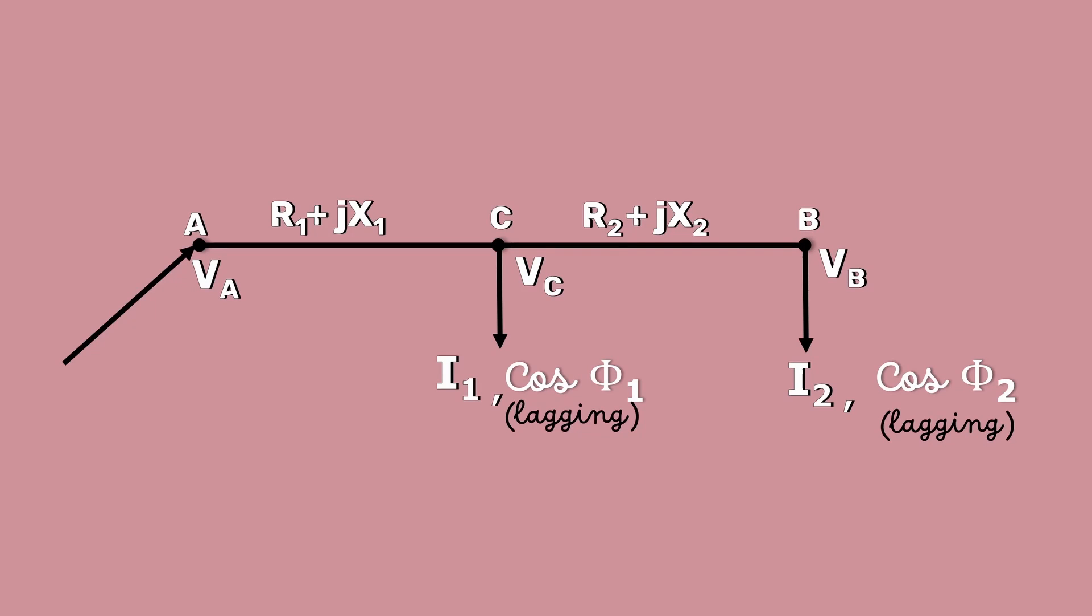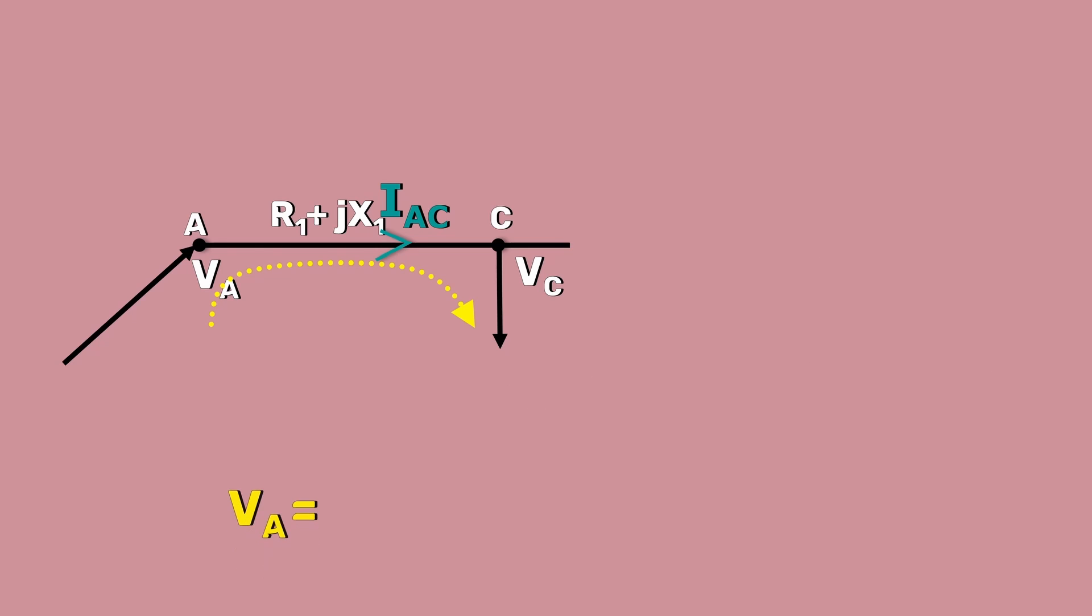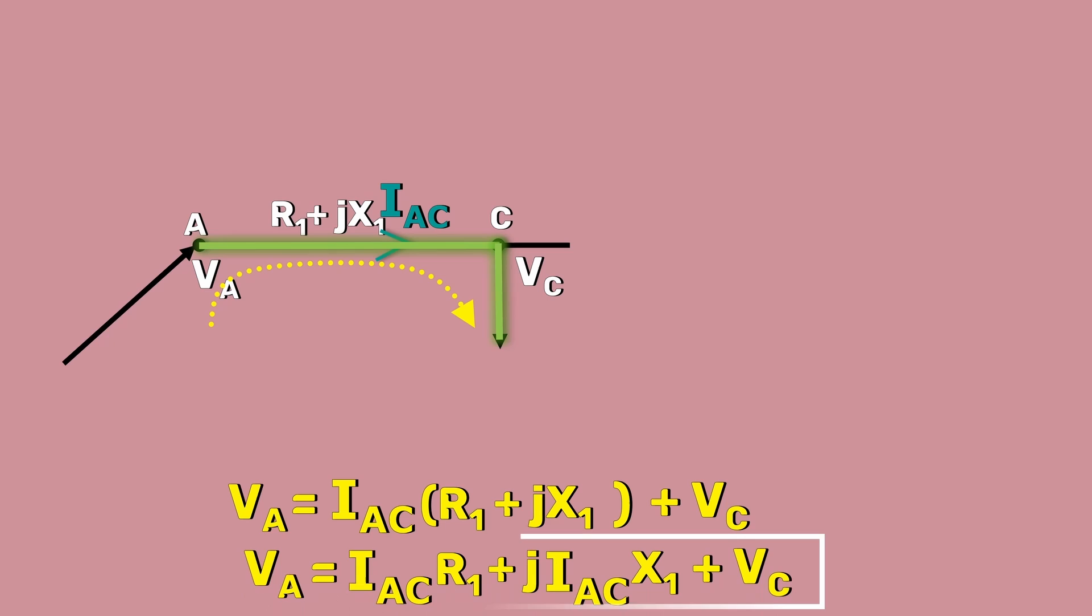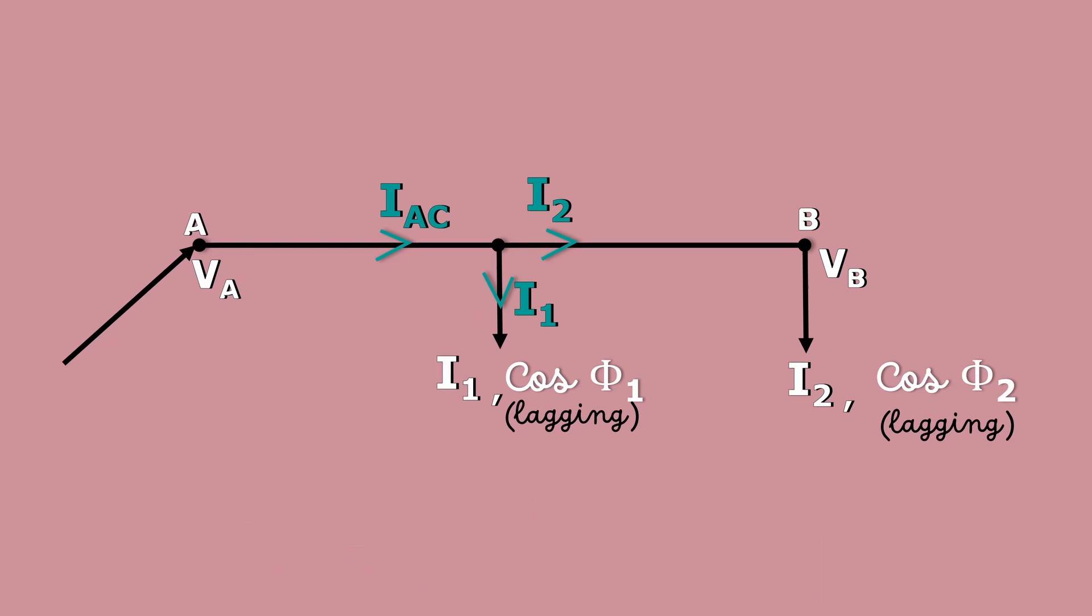Now, let's come back to our symbolic representation. From here, can you find the equation for the sending end voltage VA? Let's consider the current through the section AC is IAC. Then, VA is equal to IAC into R1 plus JX1 plus VC. What is IAC? IAC is equal to I1 plus I2.